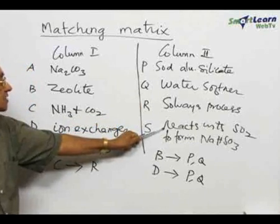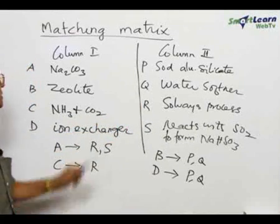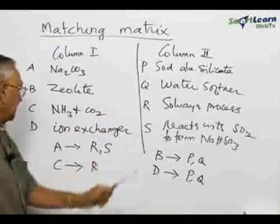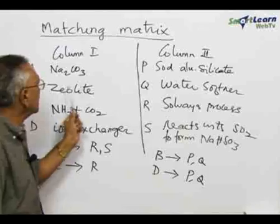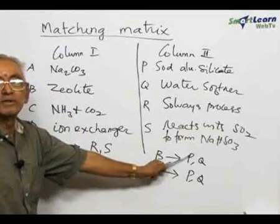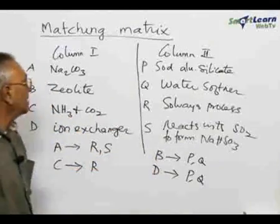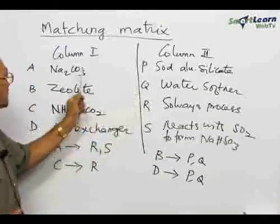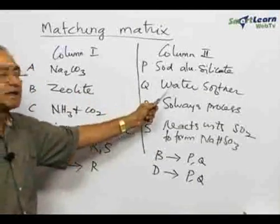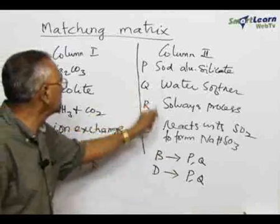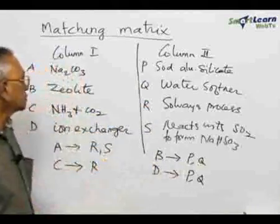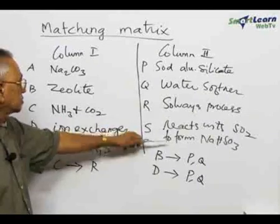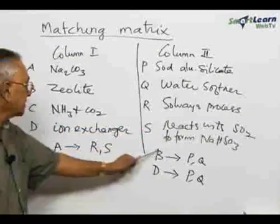Coming to the next one — zeolite. Zeolite is actually sodium aluminum silicate, so B matches with P. Zeolites are also used as water softeners and for ion exchange, therefore B also matches with Q. Zeolite has nothing to do with the Solvay process or with sulphur dioxide, so R and S do not match with B. Therefore, B matches with P and Q.